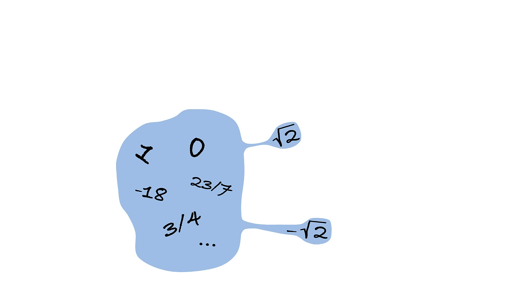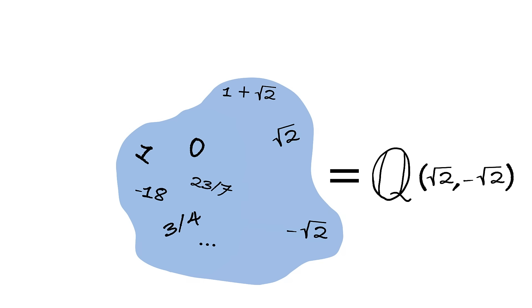But after appending the two roots of our equation, we no longer have a field. For instance, adding one and square root of two already gets us outside of our set. So instead of just appending the two roots, let's also append everything we can get as a result of any legitimate algebraic operations performed any finite number of times. And now we got ourselves a field.